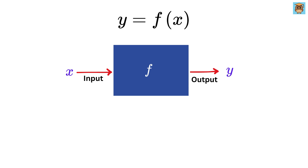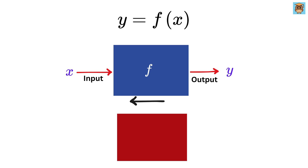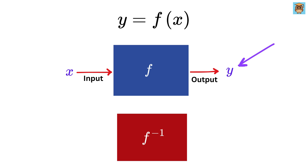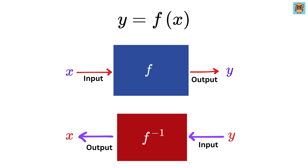The inverse of a function is like rewinding the machine. Suppose we have a machine which is the inverse of this machine. Here your output, or y value, now acts as an input to this machine, and then we try to figure out what the original input was — the value of x. That's what an inverse of a function is.